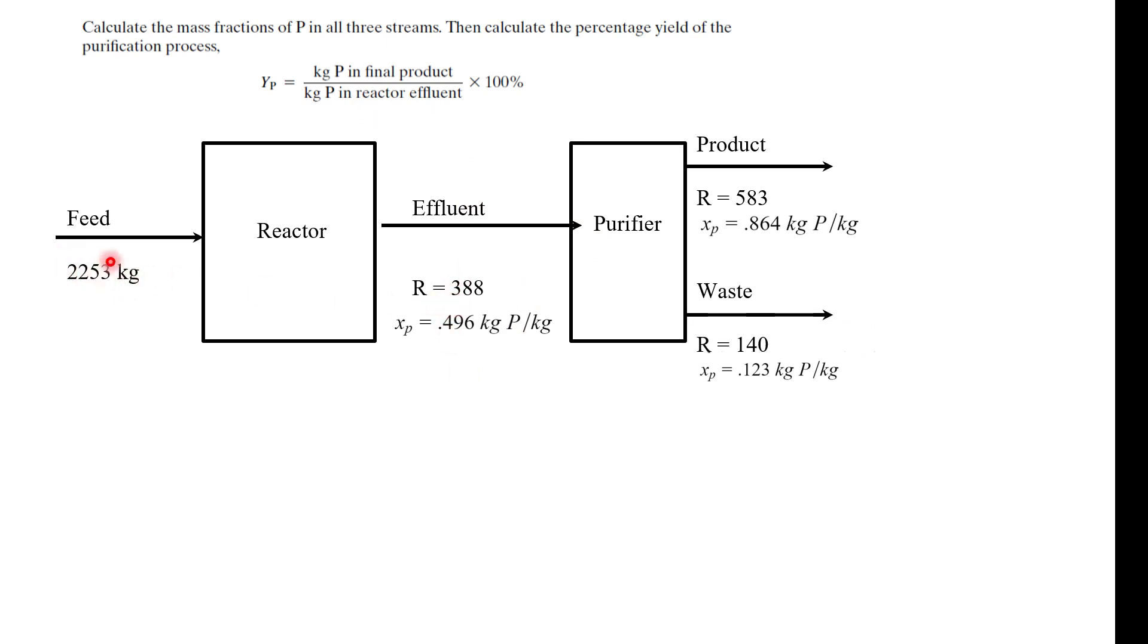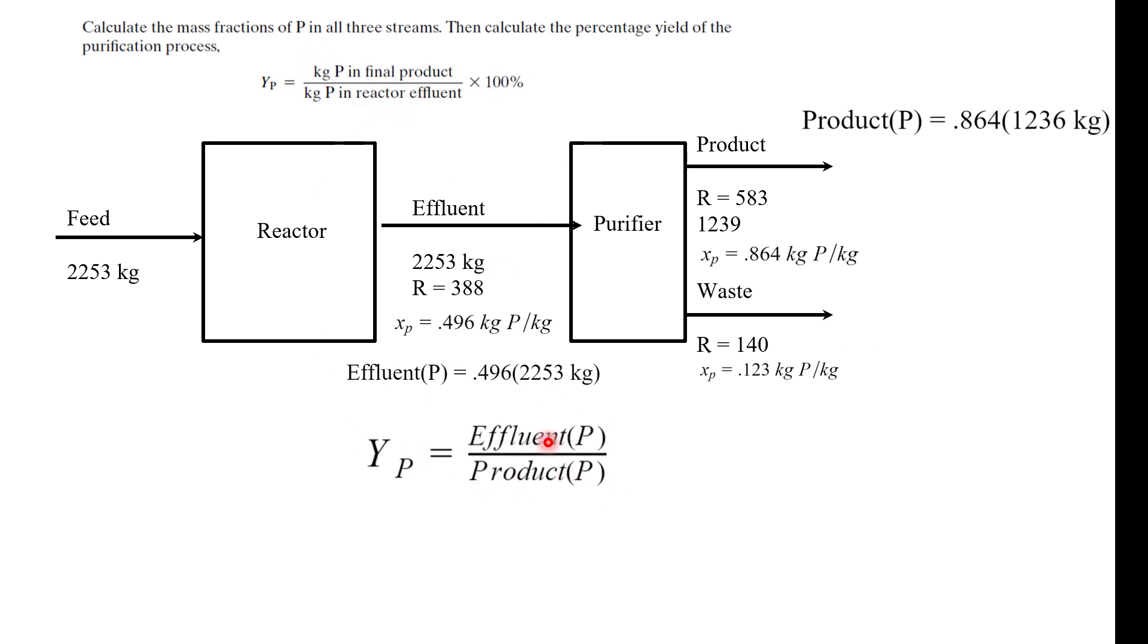So what we do is we have this definition for the purification yield, which is the kilograms of the product in the final product, which is here, and the kilograms of the product in the reactor effluent, which is here. How do we calculate that? Notice how this is a feed here. In equals out because nothing's coming in or out other than this guy and this guy. Conservation of mass. Now we can calculate the product in the effluent by multiplying the mass fraction of the product in the effluent. Similarly for the product, we can multiply the mass fraction of the product in the product stream. Now we can plug in this value. You're going to do the calculation yourself, but you can plug in this equation. It's given right here and we have the values right here. You should get about 95%. That is our answer for part B.